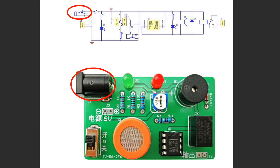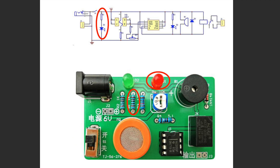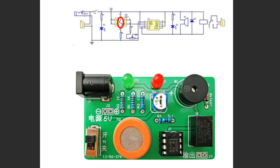Now the circuit description: this circuit can be powered by a 5 to 7.5 volt DC power supply. Switch S1 is the power switch; resistor R1 and LED D1 are used for power indication. The internal sensor MQ3 needs to be heated to a certain temperature during operation, so there is a heating wire inside. Resistor R4 is the current limiting resistor of that heating wire.